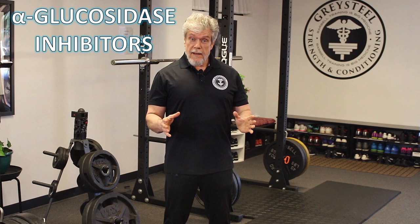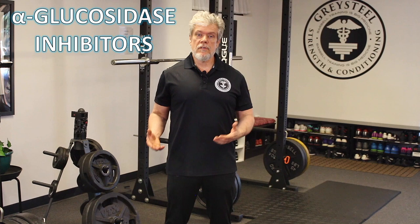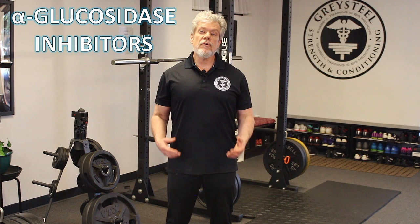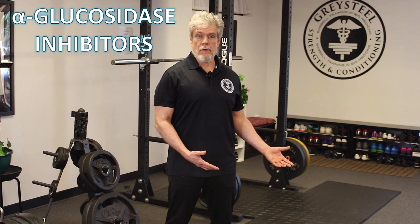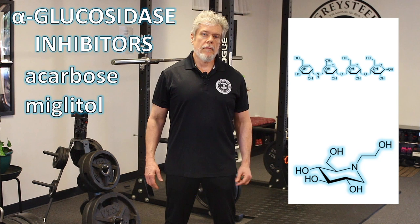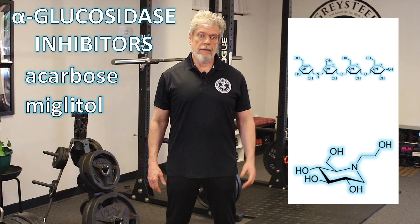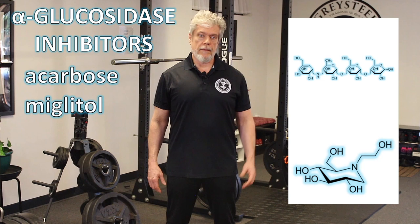One last class of oral anti-diabetic medications: the alpha-glucosidase inhibitors. Inside the lining of the gut there are alpha-glucosidase enzymes whose job it is to cut carbohydrates into simple sugars that can be absorbed into the bloodstream. Alpha-glucosidase inhibitors block this process and diminish gut absorption of carbohydrates, helping to control blood sugar. This class includes acarbose and miglitol, taken orally. Because these drugs leave more carbohydrate in the gut for bacteria to ferment, common side effects include flatulence, diarrhea, and bloating, and hypoglycemia can also occur.